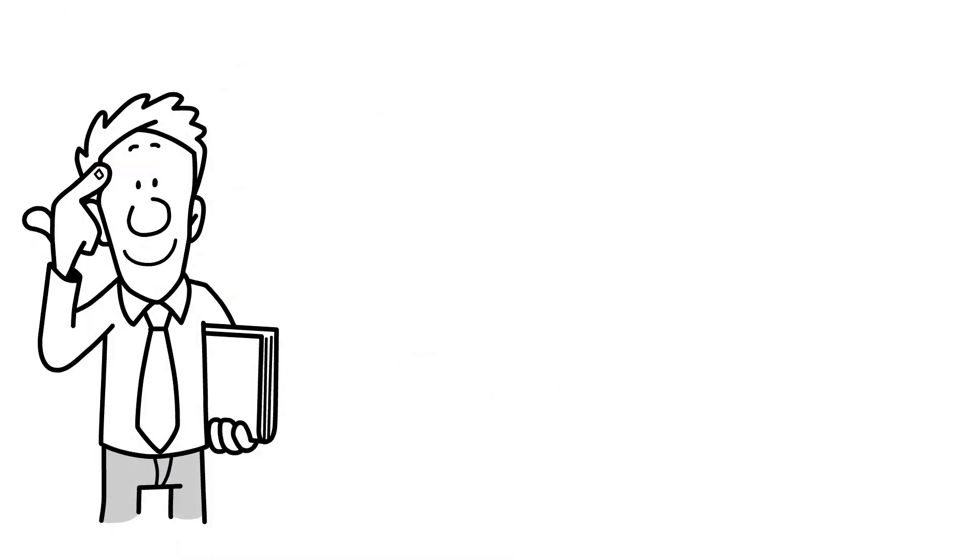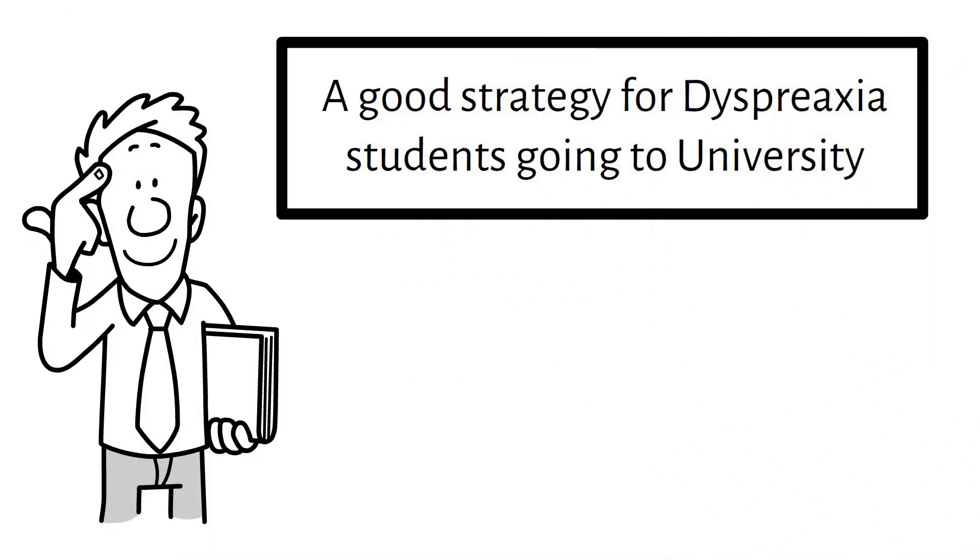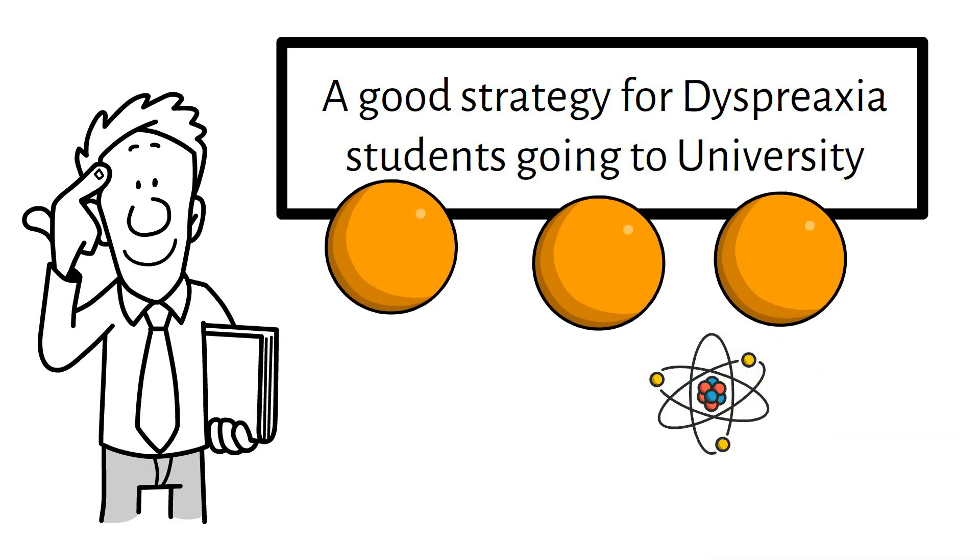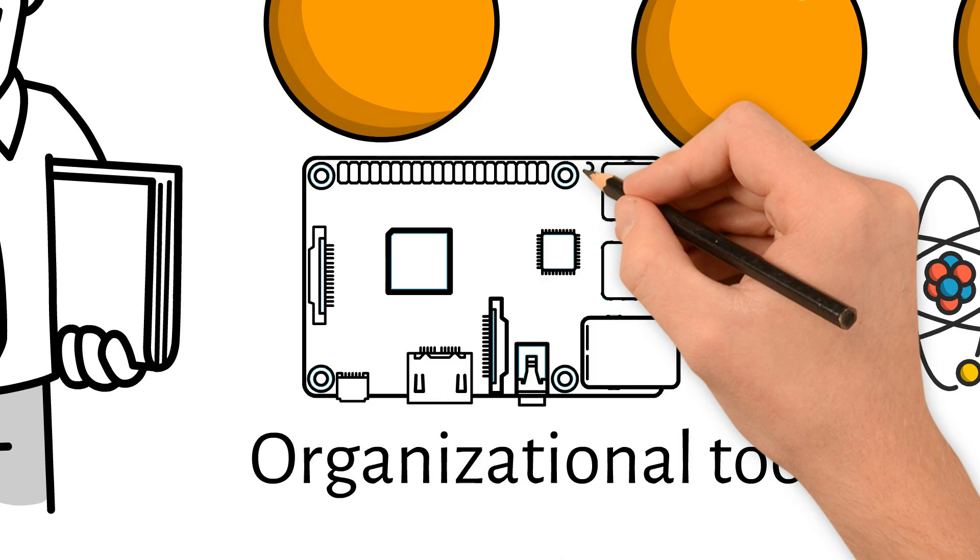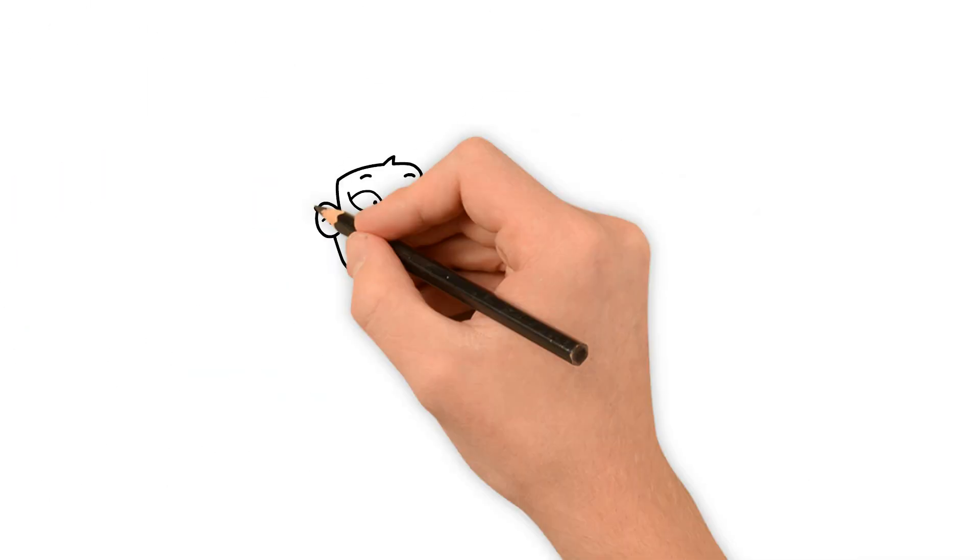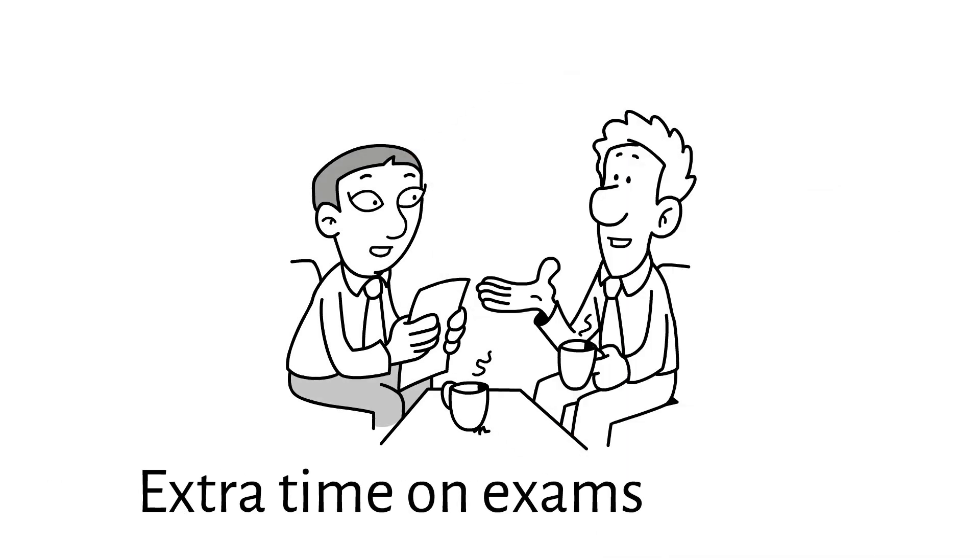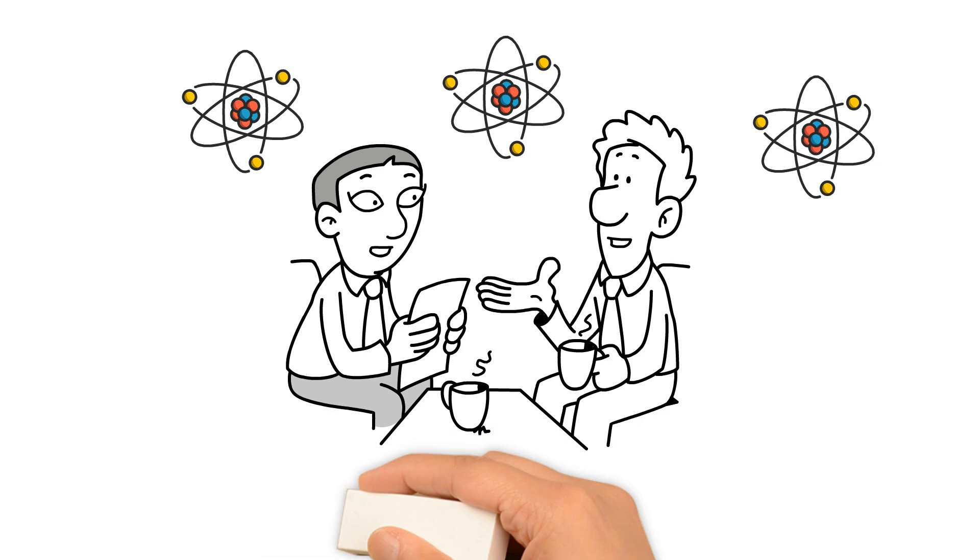Part 5. A good strategy for dyspraxia students going to university. Students with dyspraxia attending university can benefit from using organizational tools such as planners, reminders and assistive technology. They should also seek support from disability services which can provide accommodations like extra time on exams, accessible note-taking methods and physical adjustments to learning environments.